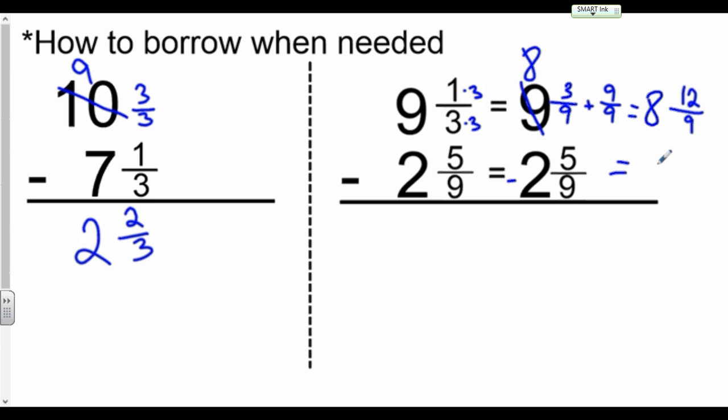This 8 is brought over, and now we can say 8 and 12 ninths minus 2 and 5 ninths. So 8 minus 2 is 6, and 12 minus 5 is 7. Keep the same denominator, 9. If I can't simplify it, there's your final answer.